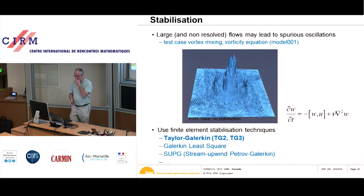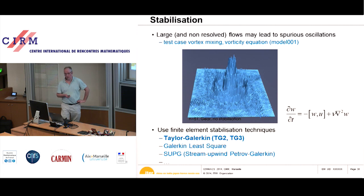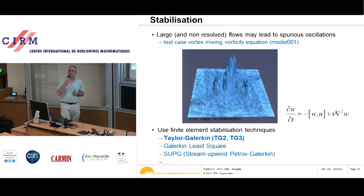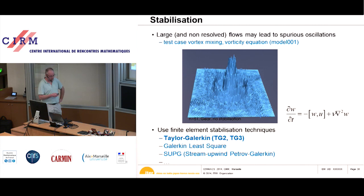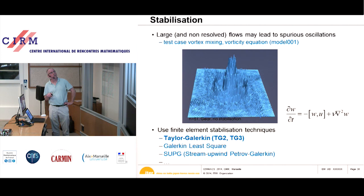An important ingredient is numerical stabilization. The MHD equations are numerically not very stable in the presence of large flows. For applications like pellet injection where the plasma moves at the sound velocity, we applied the Tau-Galerkin (TG2) stabilization method implemented in the code. Without stabilization, the solution is very noisy with 51 finite elements.